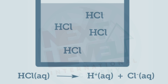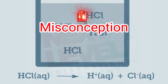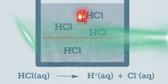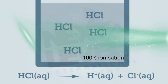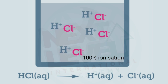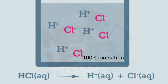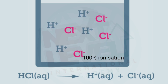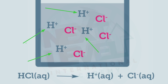We have hydrochloric acid, which is a strong acid. A strong acid is an acid which ionizes completely in water. One misconception is that students always take strong acid to mean concentrated acid, which is wrong. A strong acid can be concentrated or even dilute. Suppose we have four HCl molecules — all four will dissociate, ionize in water, and break down into H⁺ and Cl⁻.